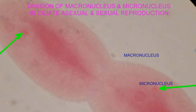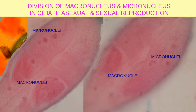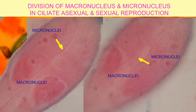In contrast, in conjugation, which is sexual reproduction, it is the micronuclei which undergo meiosis to produce haploid cells. A cytoplasmic bridge is formed